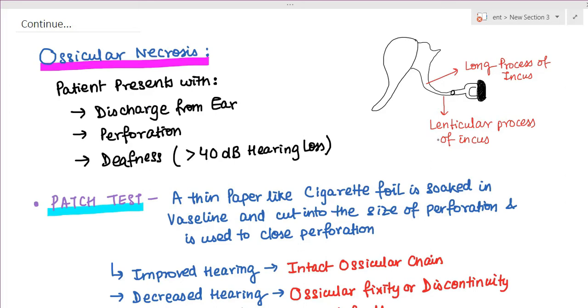The most commonly involved ossicle or part of ossicle in ossicular necrosis is the lenticular process of incus, followed by long process of incus and then suprastructure of stapes. These are due to poor vascularity.